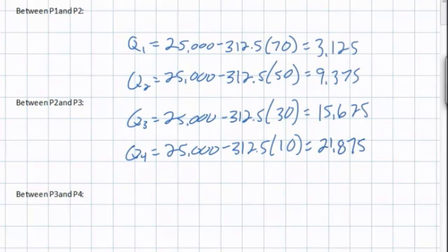Now we know four different quantities that correspond with the four prices on our graph. What we can do now is apply these quantities to our PED formula and find the percent change in quantity between P1 and P2, between P2 and P3, and between P3 and P4. Then we'll have the price elasticities of demand for ski lift tickets at a range of prices from 70 francs to 10 francs.